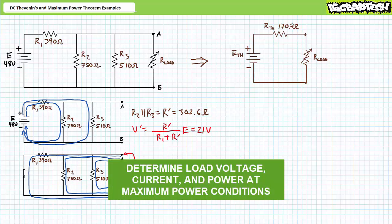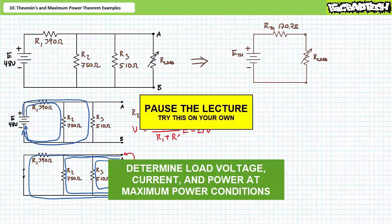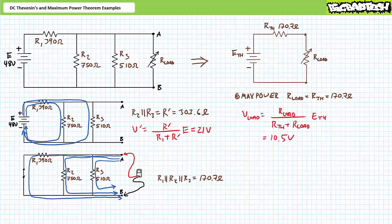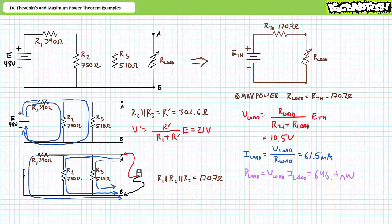Stage two now dictates we determine the load resistance which receives maximum power — solve for voltage, current, and power at maximum power conditions. By all means, pause and try stage two on your own. If you're tracking, you should obtain the following results. The DC Maximum Power Transfer Theorem states maximum power is transferred to a load when the load resistance equals the Thevenin's equivalent resistance. Therefore, our variable load resistor sees maximum power at a value of 170.7 ohms. The voltage divider rule demonstrates voltage across the load is 10.5 volts; Ohm's law gives a current of 61.5 milliamps; and the DC power formula gives 646.4 milliwatts. Any change in load resistor magnitude, lesser or greater, should result in less real power delivery.